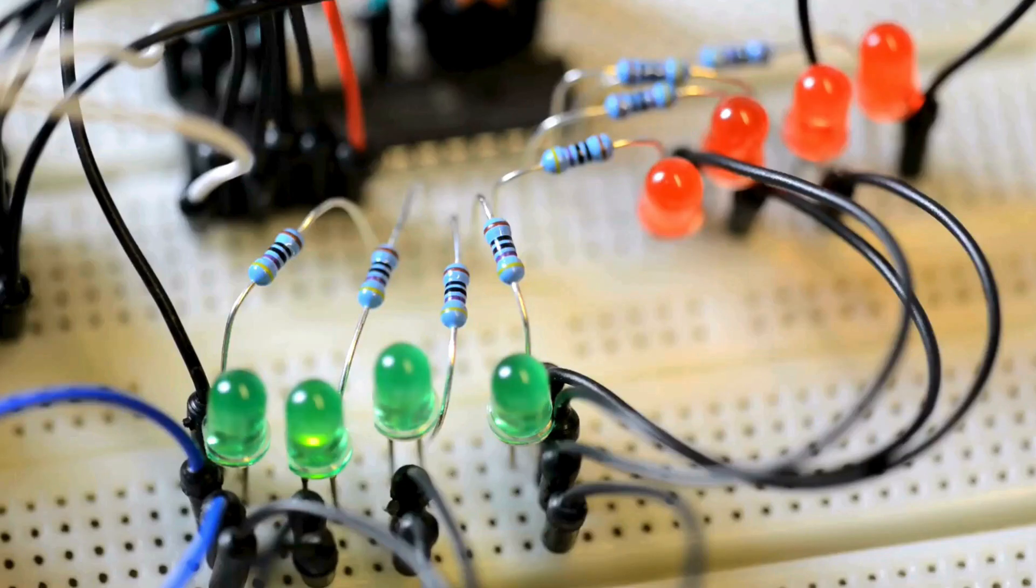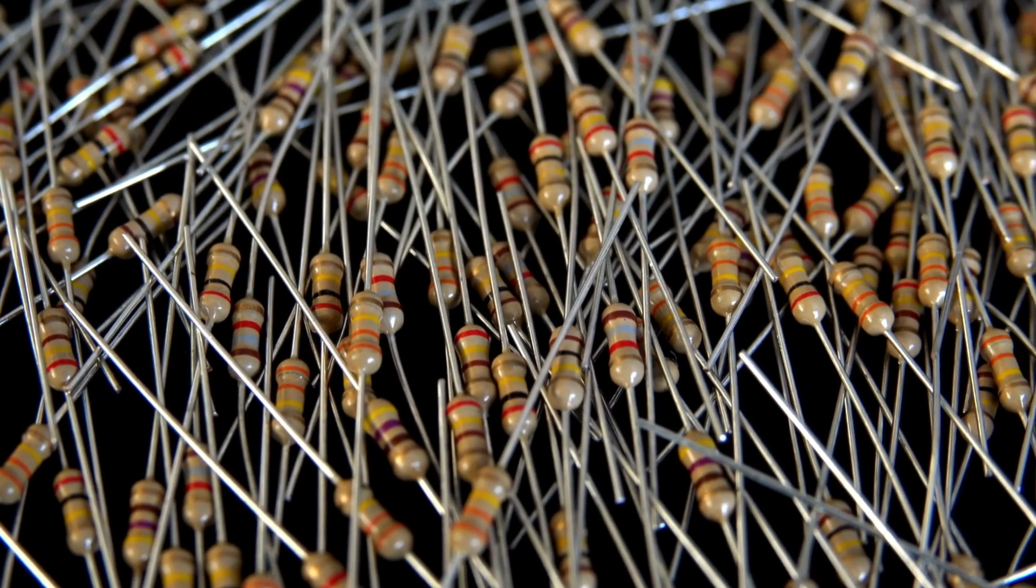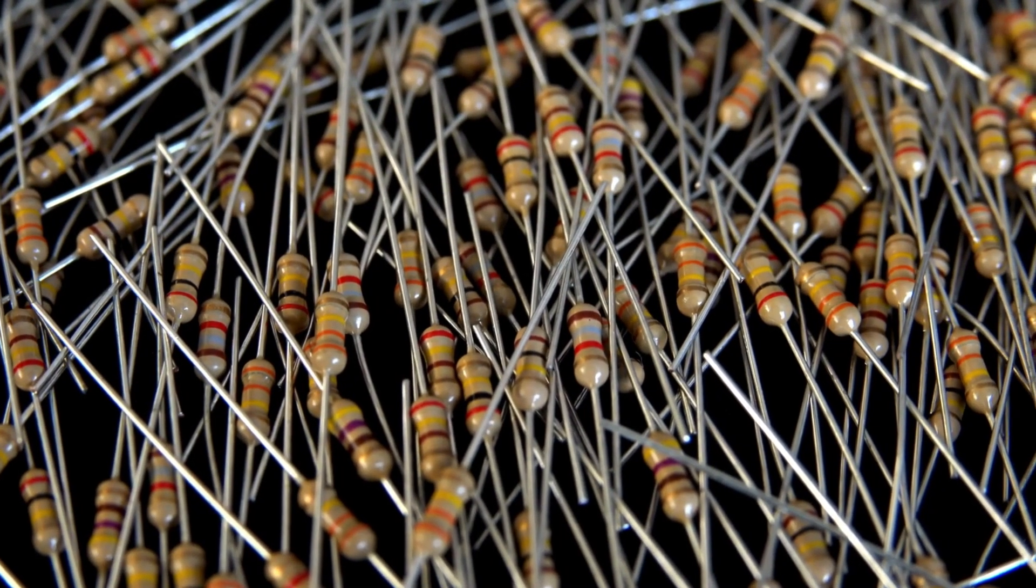Resistors are used to limit the amount of current flowing through a circuit. Resistors come in different materials like carbon film and metal film. Today we're focusing on understanding the color code, the set of colored stripes that tell you the resistor's value.